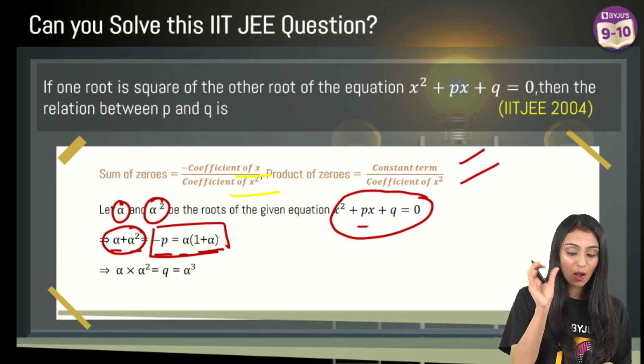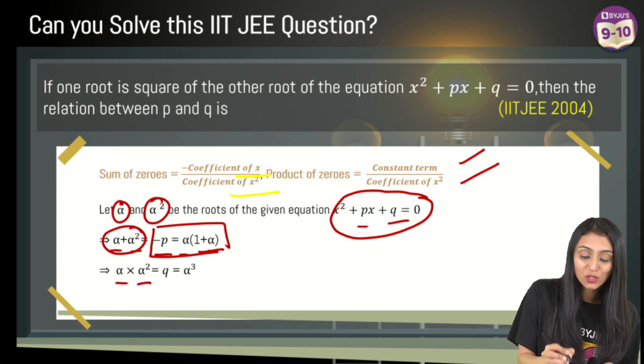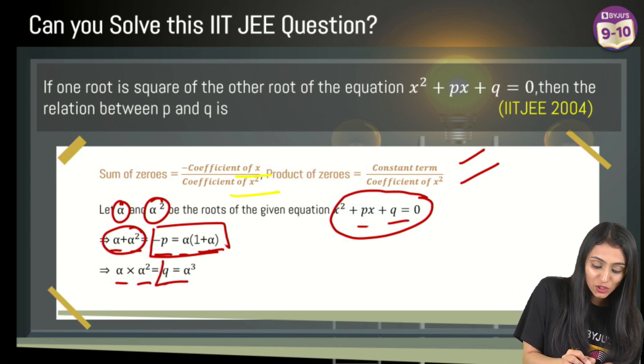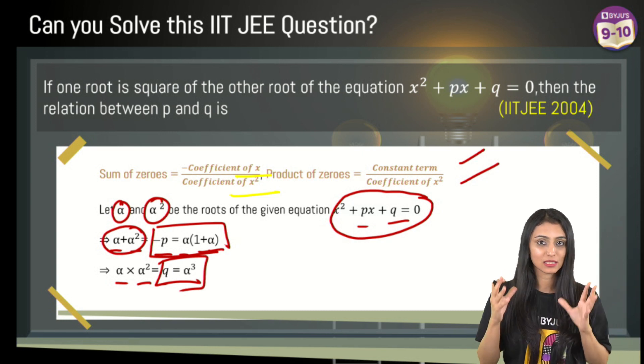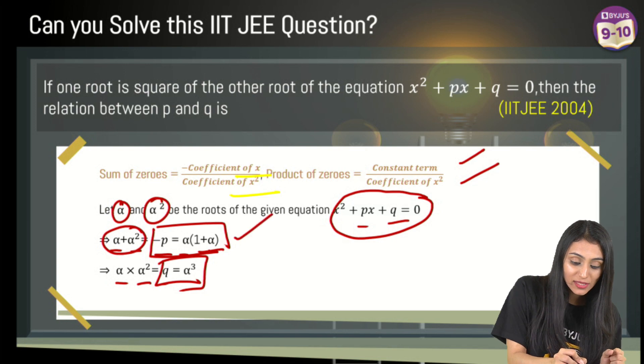Now product of zeros: alpha times alpha squared equals constant term by coefficient of x², which is q. So q equals alpha cubed. We'll use these two equations to simplify further.